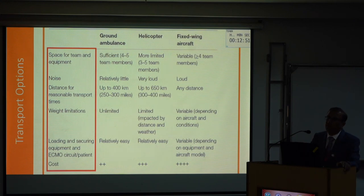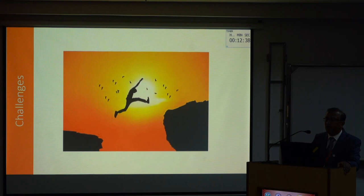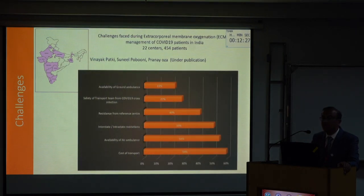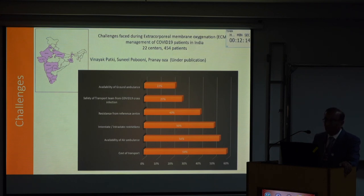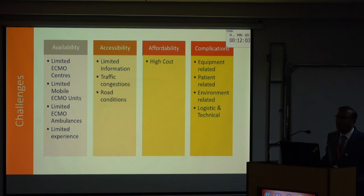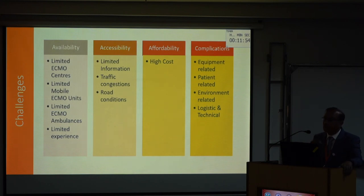The challenges are divided into four limiting factors: availability, accessibility, affordability, and complications. Our data from 11 states, 22 centers, and 450 locations found that cost of transport was the most important challenge, followed by availability of air ambulance and interstate issues. More importantly in the COVID era, the safety of transport was a major concern. As far as availability: limited ECMO centers, limited mobile ECMO units, limited ECMO ambulances, and most importantly limited experience in transporting ECMO patients. For accessibility: limited Indian data, traffic congestion, and road conditions. Then affordability, and when all those factors are addressed, complications remain the most challenging — these can be equipment-related, patient-related, environment-related, and logistical.